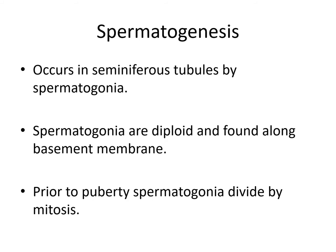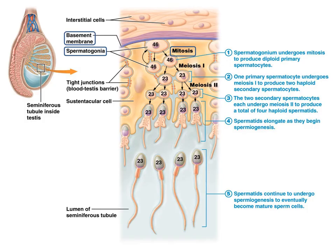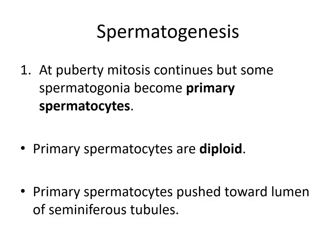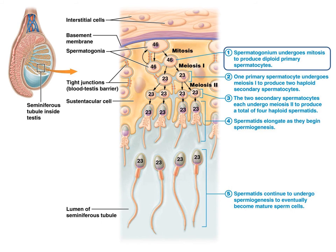Spermatogenesis occurs in the seminiferous tubules and begins with a cell called the spermatogonia. Spermatogonia are diploid, meaning they have a full complement of 46 chromosomes, and they're found along the basement membrane. Prior to puberty, spermatogonia only divide by mitosis. Here, the spermatogonia undergoing spermatogenesis are shown along the basement membrane. At puberty, mitosis continues, but some spermatogonia become primary spermatocytes, which are also diploid. Primary spermatocytes push toward the lumen of the seminiferous tubules as they mature, so the more mature sperm are forming nearer the lumen.